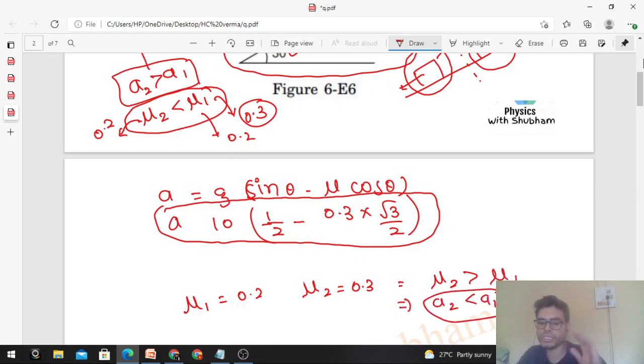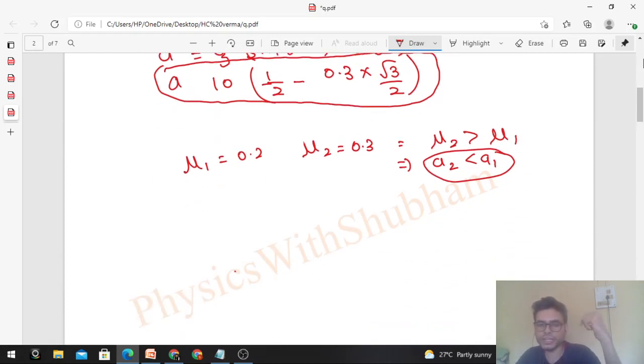Then what will happen? The back block will push it. The front block will move slowly and the back block will push it. Equal and opposite force will act on the back block. So ultimately what will happen? The back block is the 4 kg block - its acceleration will increase. And finally, they will move together with a common acceleration. Both will move together. Both move as a single body.